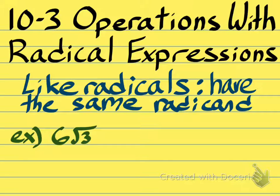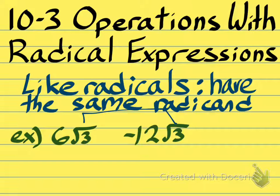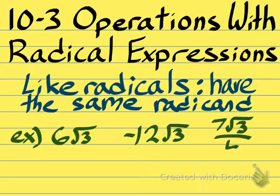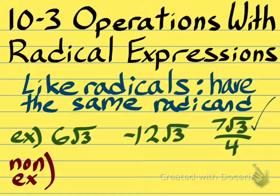For example, if we had 6 times the square root of 3 and also negative 12 times the square root of 3, because we have these square roots of 3, these are like radicals. Like radicals can also be fractions. So because we have a 7 fourths, but there's still a radical 3 with it, all three of these are like radicals.